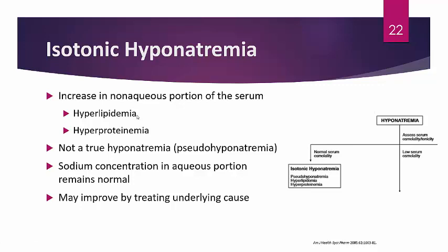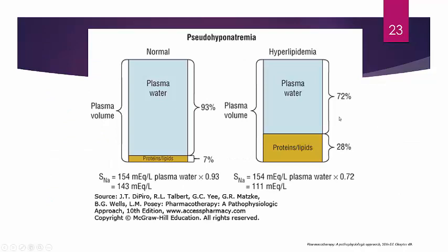To treat isotonic hyponatremia, treat the underlying cause — for example, treating hyperlipidemia by addressing elevated LDL or high triglycerides. The graphic illustrates this: the patient actually has a normal serum sodium, but increased protein or lipid in hyperproteinemia or hyperlipidemia decreases the apparent total concentration. Don't panic if you see isotonic hyponatremia — it's usually due to elevated lipids or elevated proteins.